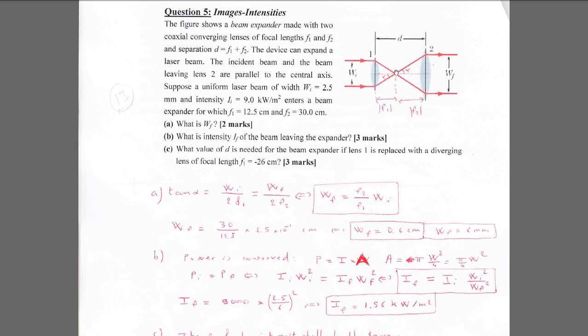Taking angle alpha, you can write: tan(alpha) equals wi divided by 2 divided by f1, and also tan(alpha) equals wf divided by 2 divided by f2. From this you can find wf since you know f1, f2, and wi. The result is wf equals 6 mm.